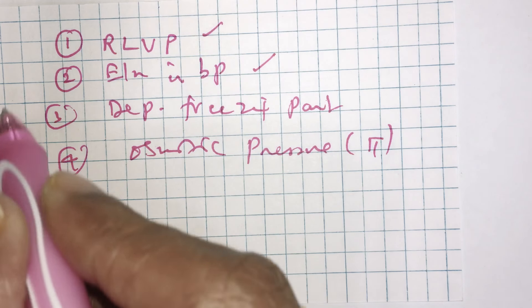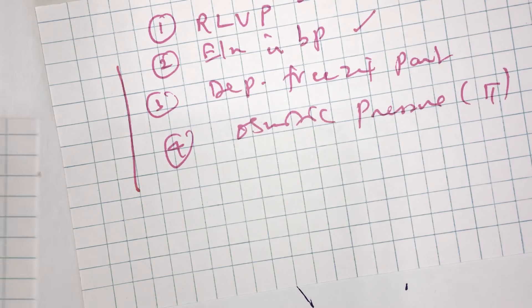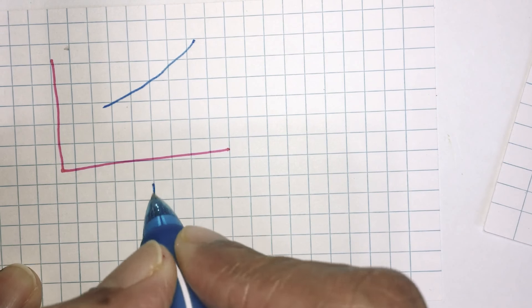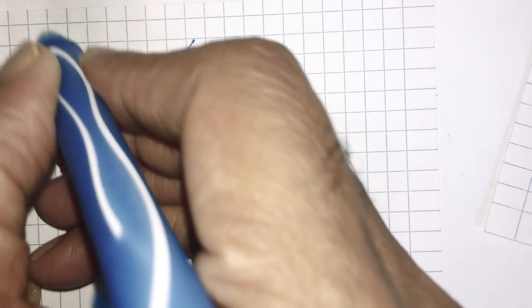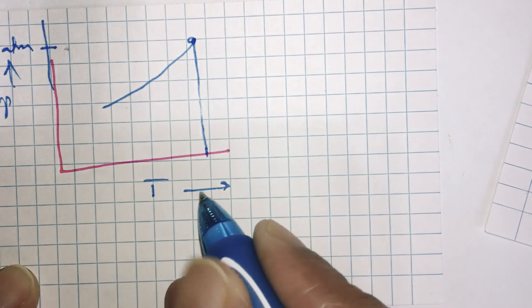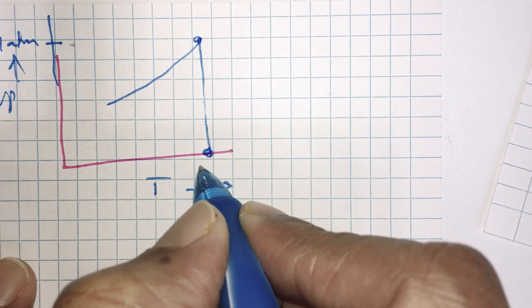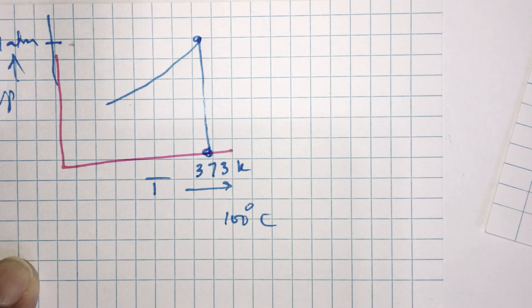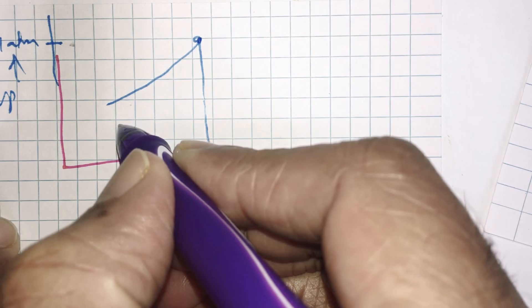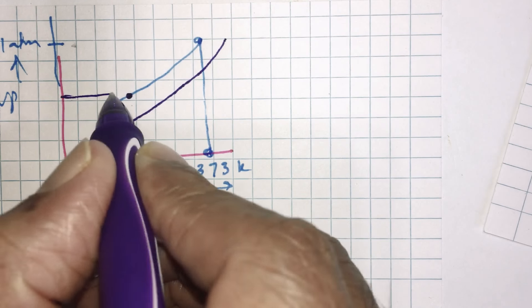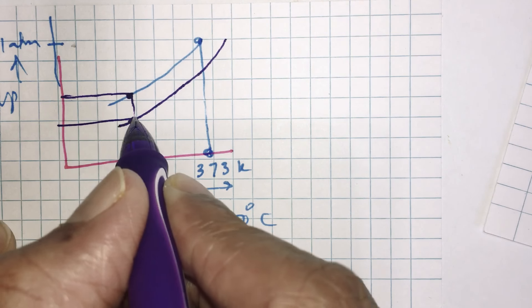Now, if I take pure water — you can take any other liquid, but I am taking water — if I plot the variation in vapor pressure with temperature, as I raise the temperature, its vapor pressure is increasing. At a particular temperature, the vapor pressure of water equals one atmosphere. The temperature where the vapor pressure of water equals one atmosphere is called the normal boiling point, which is 100 degrees centigrade. Now, if I dissolve some urea or any non-volatile solute, the vapor pressure of the solution drops — it is lower than the vapor pressure of pure water at any given temperature. This is the vapor pressure of pure water, and at the same temperature, this is the lower vapor pressure of the solution.